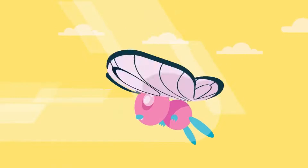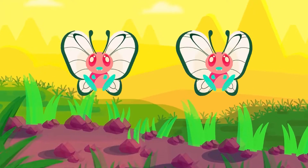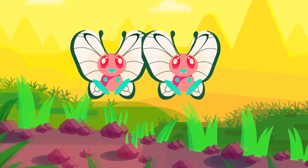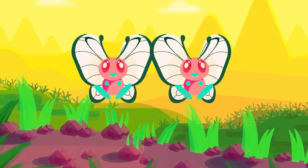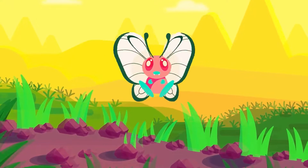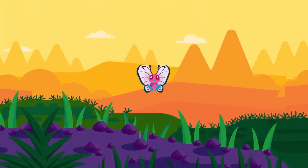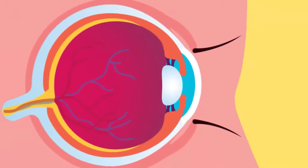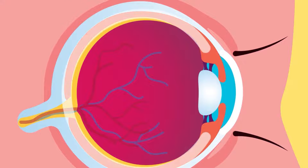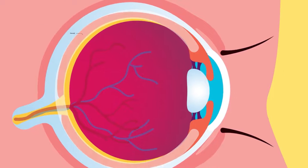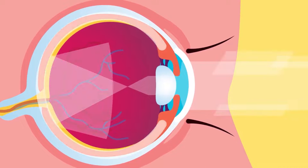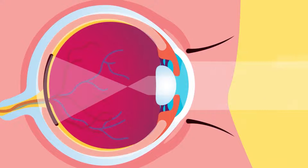Vision fields of both eyes overlap to form a stereoscopic, three-dimensional vision, and the brain translates information from both eyes to form an image. The middle layer on top of the retina is called the choroid. It has black pigments and prevents internal refraction of light.